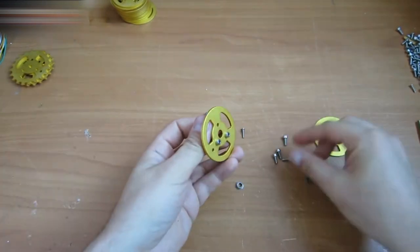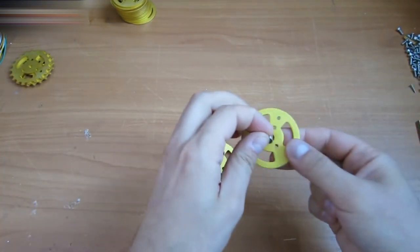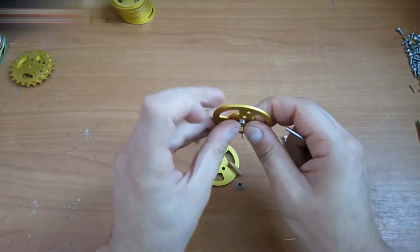Looks like these bearings only work on one side of the wheel. Look, on this side, it doesn't go in the hole. And on this side, it does.